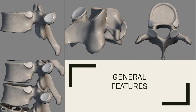And then we have the superior articular facet and process — just like the inferior, except they're on the top of the vertebrae. So this here is the superior articular facet, and then the section of bone leading up to it is the process, the superior articular process.